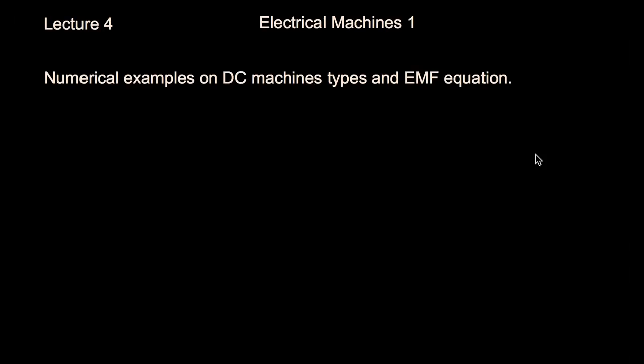Welcome to lecture 4. In this lecture we are going to talk about some numerical examples on DC machine types and EMF equations. In the earlier lecture we had listed various types of DC machines — like separately excited DC machines, self-excited DC machines, long shunt, short shunt, series, and all these kinds of DC machines. We had seen the EMF equation, so let us just quickly refresh.